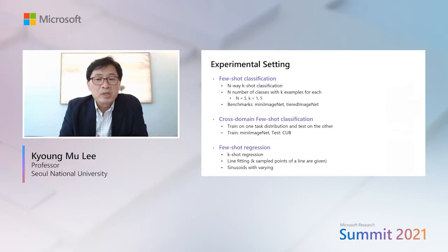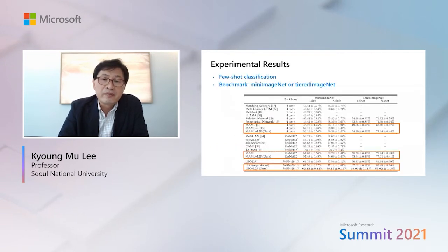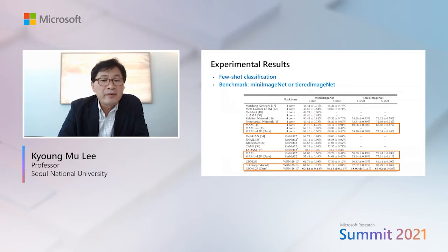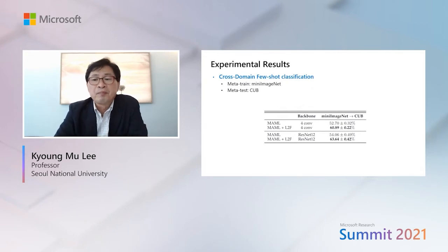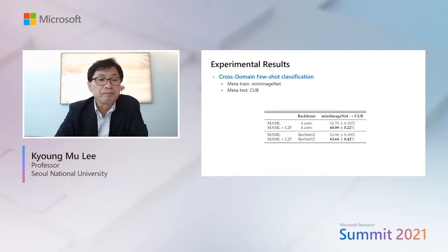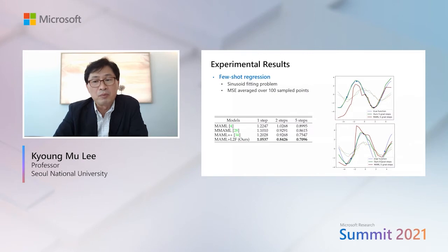In few-shot learning, algorithms are often evaluated on few-shot classification, cross-domain few-shot classification, and few-shot regression problems. In standard one-shot and five-shot classification benchmarks such as Mini ImageNet and Tiered ImageNet, L2F greatly improves the performance of MAML and is also shown to improve the SOTA method LEO. L2F also demonstrates substantial performance improvement in challenging cross-domain few-shot classification, where training is done on Mini ImageNet and testing on the CUB dataset. In few-shot regression, L2F greatly improves MAML and outperforms other baselines.